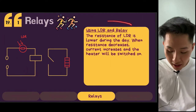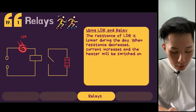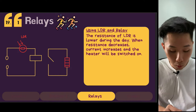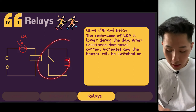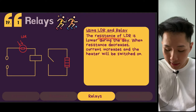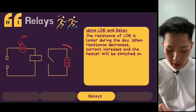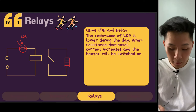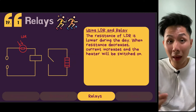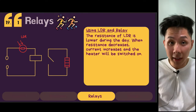Using an LDR and relay together, you can combine components to make a circuit work automatically. For example, the resistance of the LDR is lower during the day, so when resistance decreases, current increases and the heater is turned on. This is a scenario where you want to turn on the heater only when in a bright environment — that's how you can automate certain things.